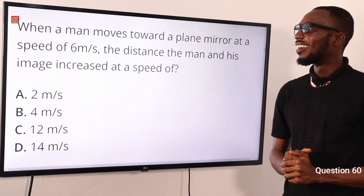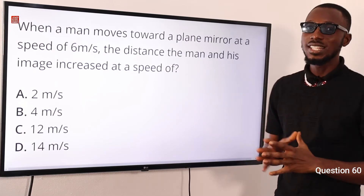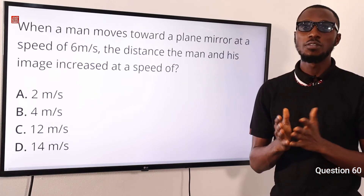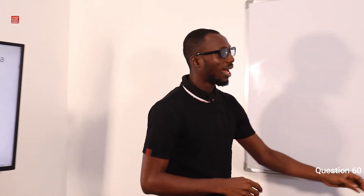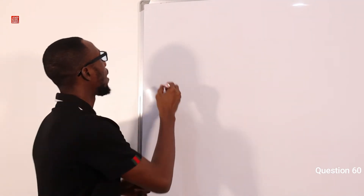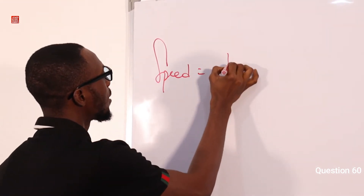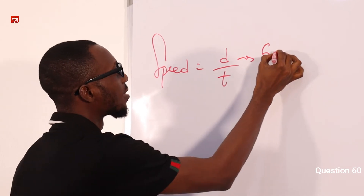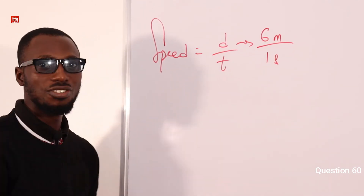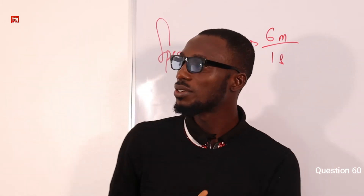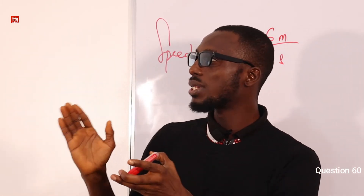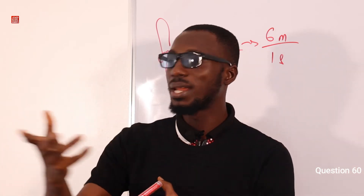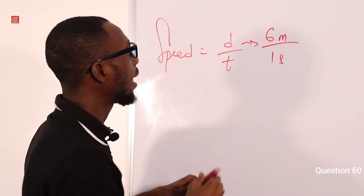Question 60: When a man moves towards a plane mirror at a speed of 6 meters per second, the distance between the man and his image increases at a speed of what? The speed is given as 6 meters per second. The distance from the man to the mirror represents the object distance, which is 6 meters per second.